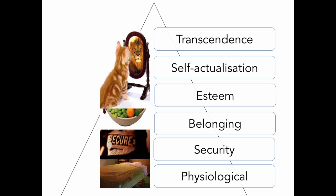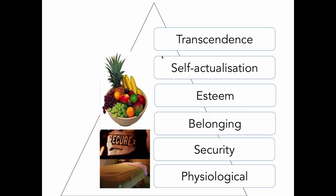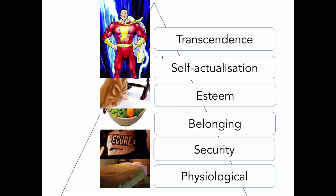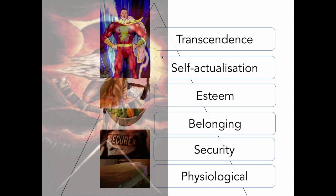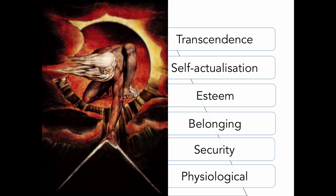Maslow described these four levels as being essential ingredients in creating the situation whereby you can achieve self-actualisation, and that is in fact the next level. Self-actualisation is the point at which you can actually begin to learn. In later years he added the very top level of this hierarchy, which he called transcendence — and transcendence is the capacity to create those other conditions in other people. So transcendence is the capacity you've got to develop in order to create a safe environment for people to learn.